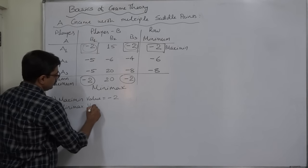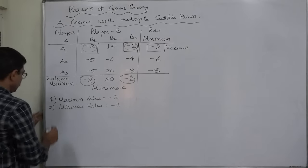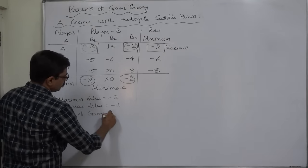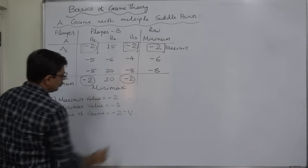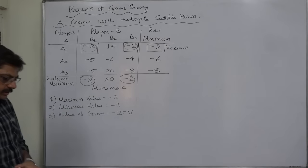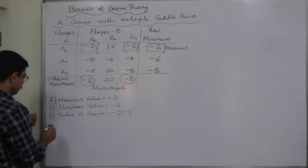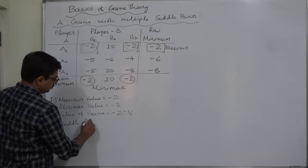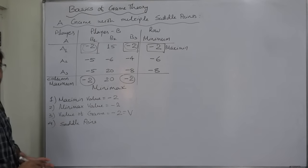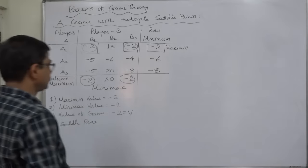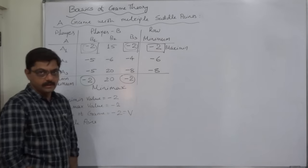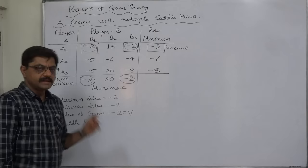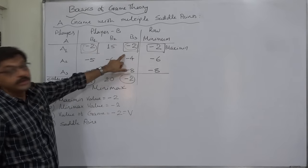The maximin value is minus 2 and the minimax value is also minus 2, therefore the value of the game is also minus 2. Now the question is: where is the saddle point? If the maximin value and minimax value are the same and found at the same location, that location becomes the saddle point.